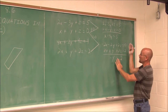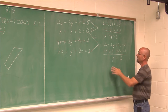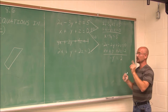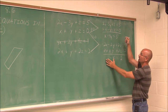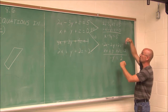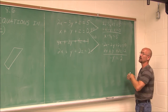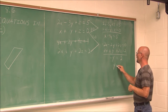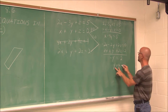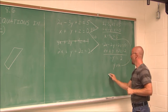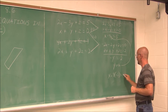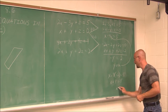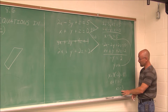Now I substitute y equals negative 2 into x minus 4y equals 5: x minus 4 times negative 2 equals 5, which gives x plus 8 equals 5. Subtracting 8 from both sides gives x equals negative 3. So x is negative 3 when y is negative 2.